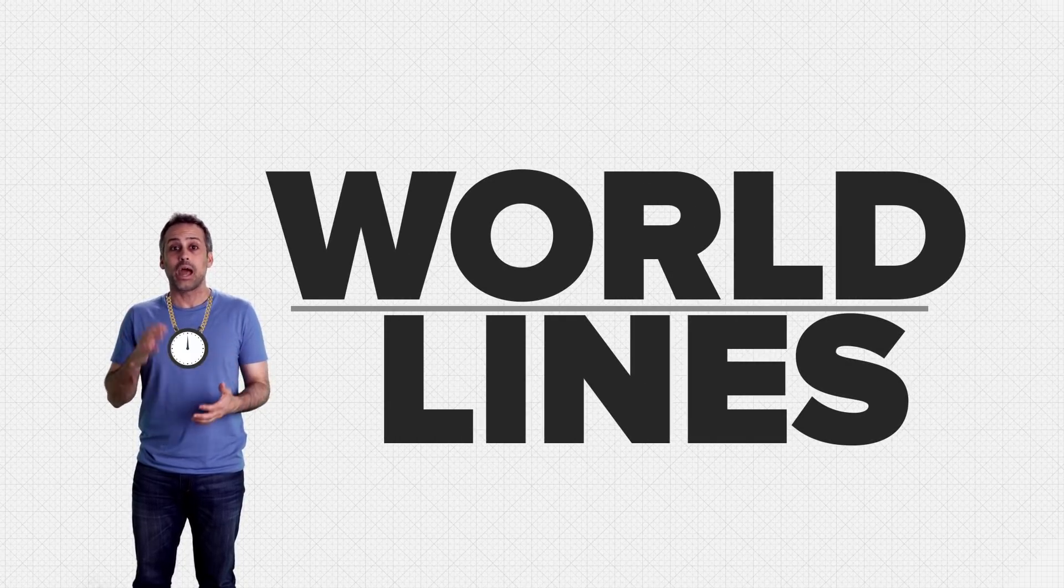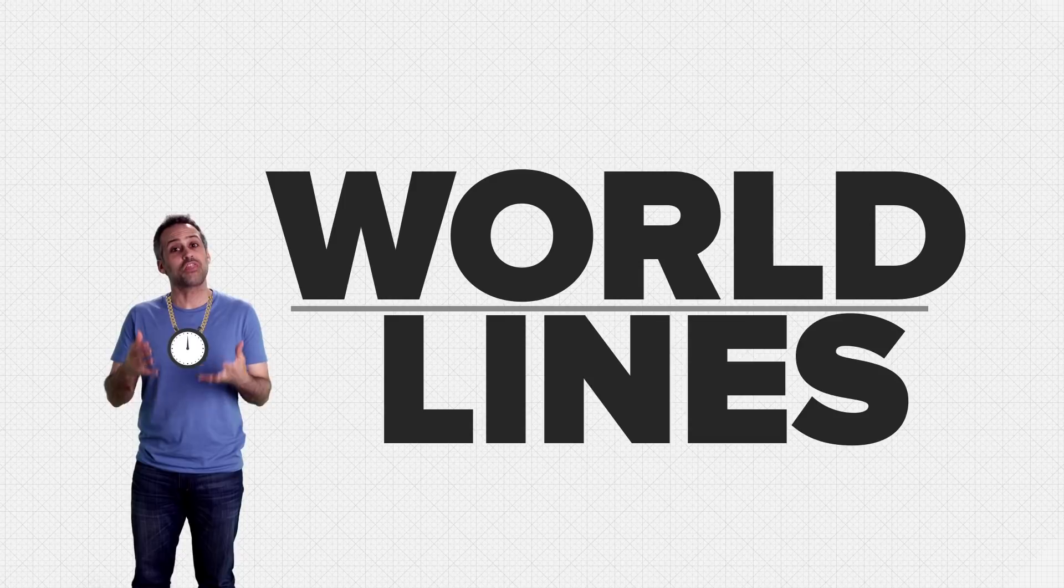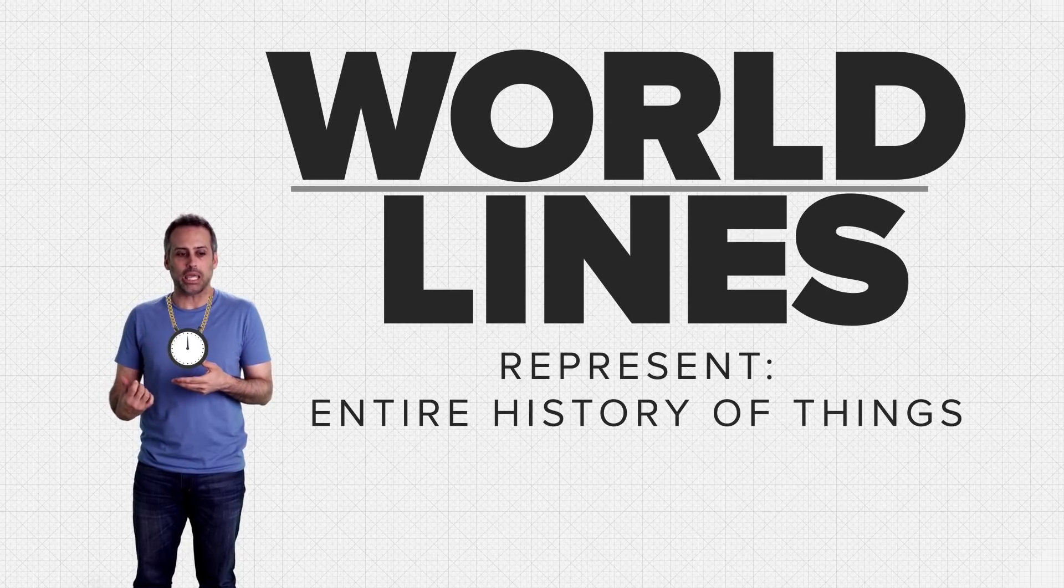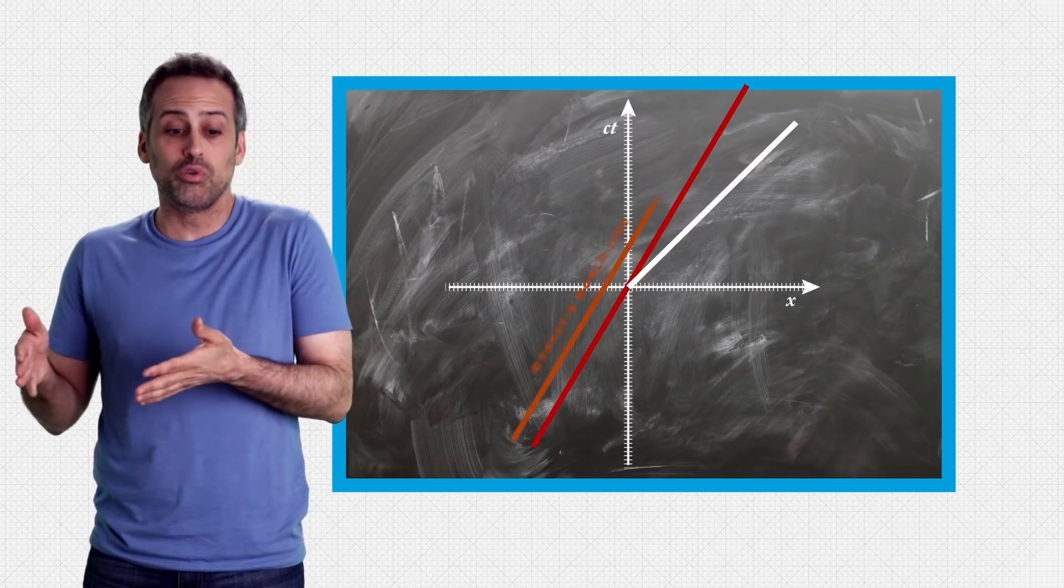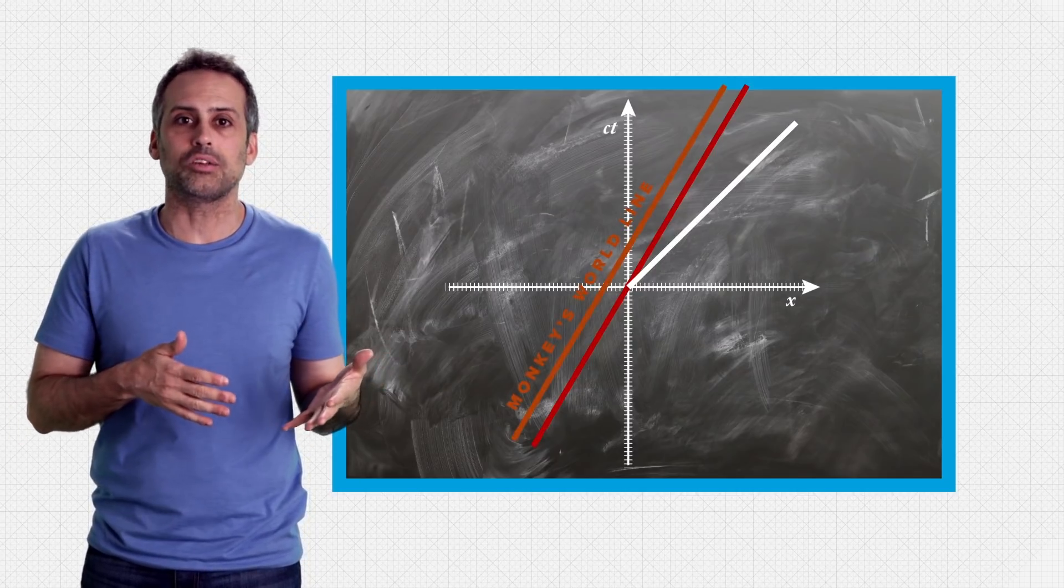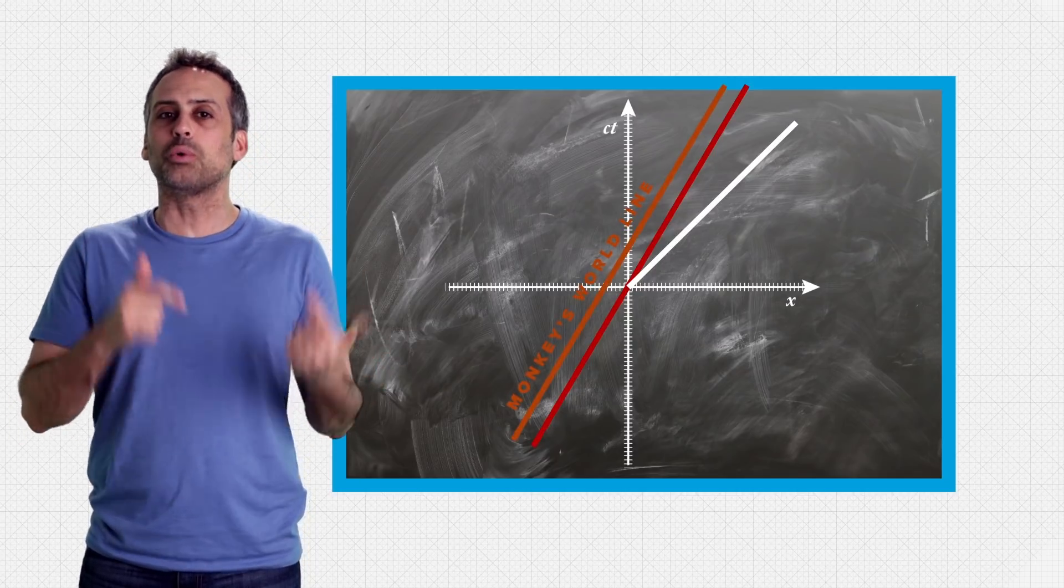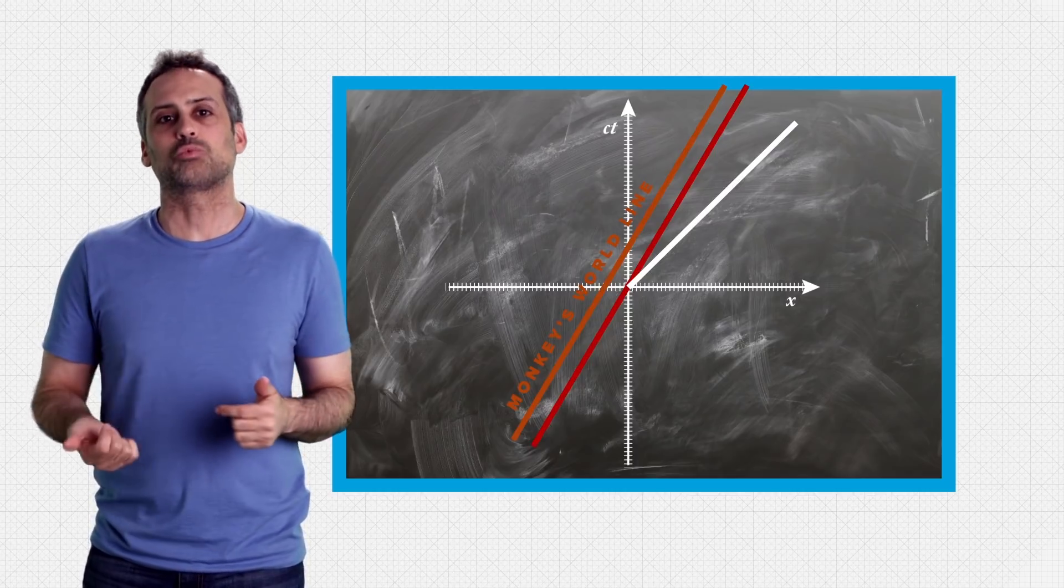They're called world lines, and they represent the entire histories of things, things like that monkey. He's perched at a fixed spot on the red guy's x-axis, and so he moves with the same constant speed that the red guy does. So the monkey's world line is also a line parallel to the red guy's world line.